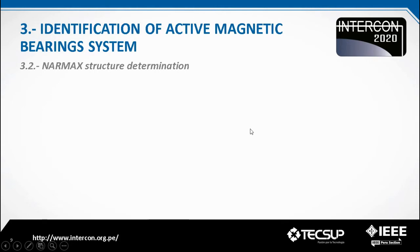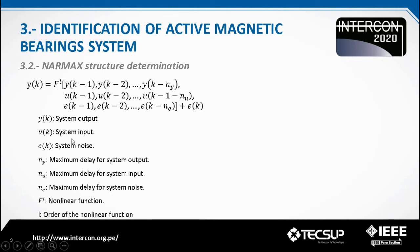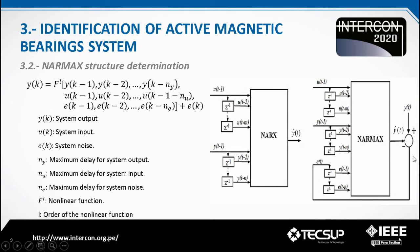NARMAX is the most complete nonlinear identification model, which is able to describe a wide variety of nonlinear systems, and is defined by the following equations, where y represents system output, u represents system input, e represents system noise, ny is the maximum delay for system output, nu is the maximum delay for system input, ne is the maximum delay for system noise, f is the nonlinear function, and l is the order of the nonlinear function. A simplified form of the NARMAX model is the NARX structure, where the NARX model has an error feedback between the real signal and the approximate signal.